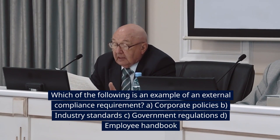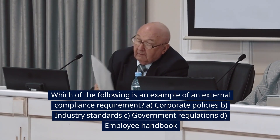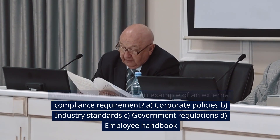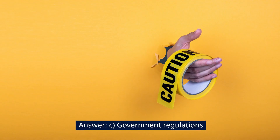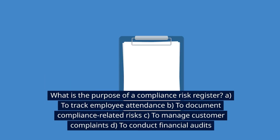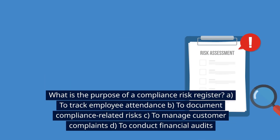Which of the following is an example of an external compliance requirement? A. Corporate policies. B. Industry standards. C. Government regulations. D. Employee handbook. Answer: C. Government regulations.